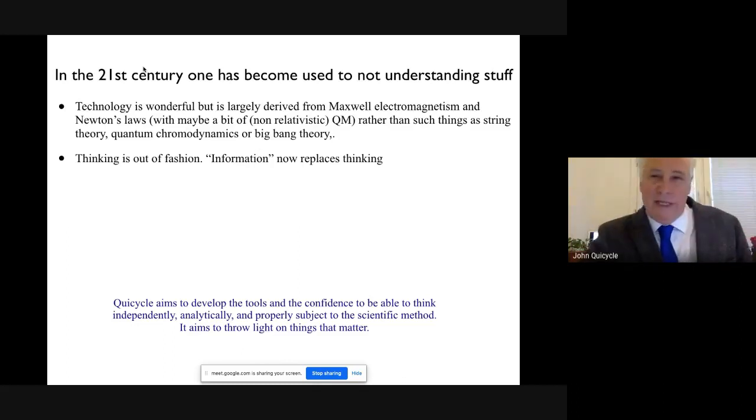Another thing that's happened with this enormous quantity of information that's sitting around is that thinking, or being able to think things through from first principles, has gone out of fashion. It's become more fashionable to take information, usually from other people, from more or less reliable sources. Very often the ultimate authority that's been taken now in the 21st century is not thinking from first principles, but consulting an expert or having a look at the body of opinion, perhaps in Wikipedia, of what other people think.